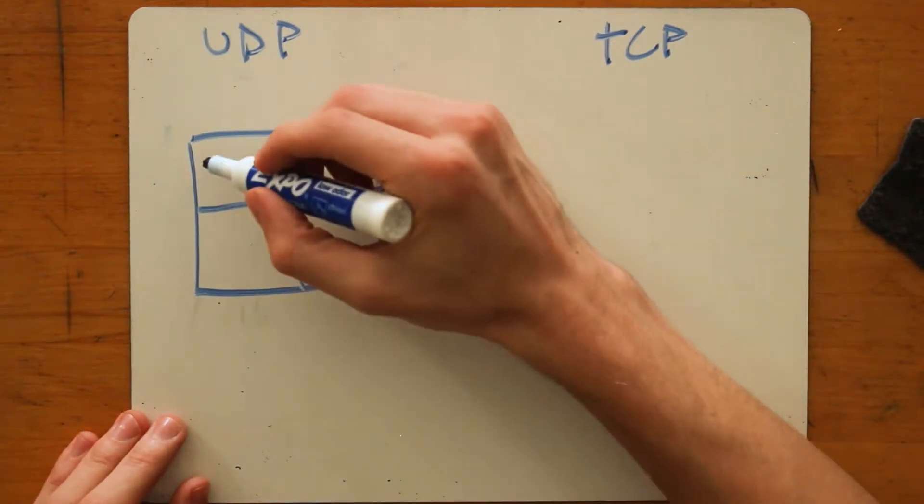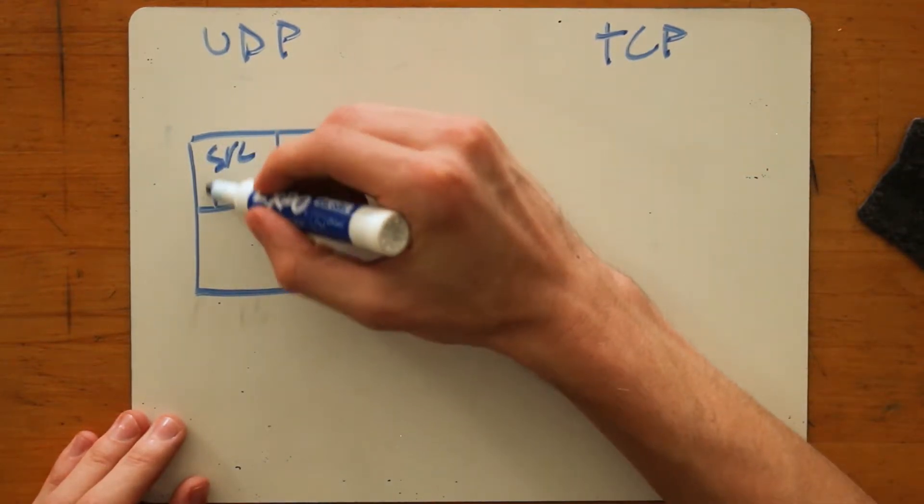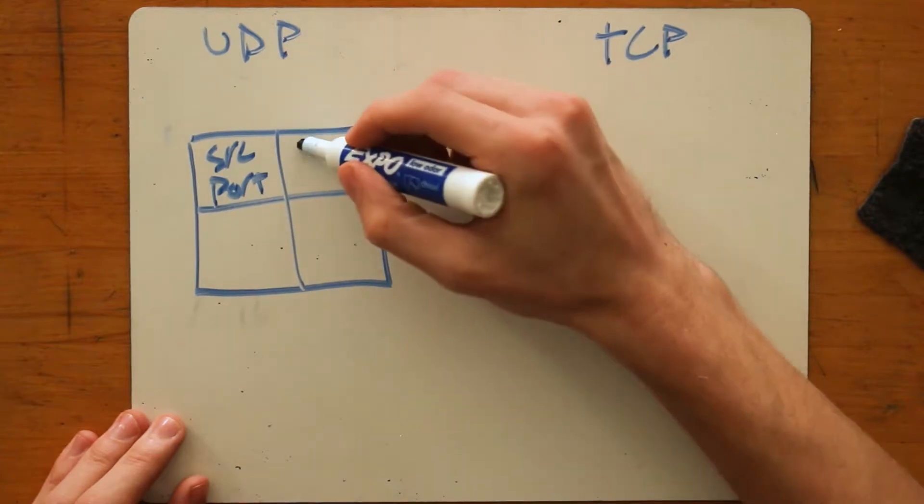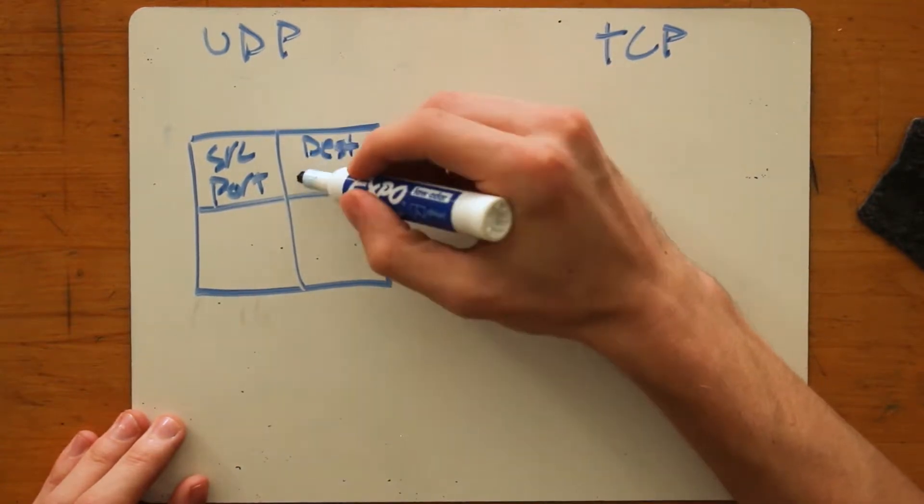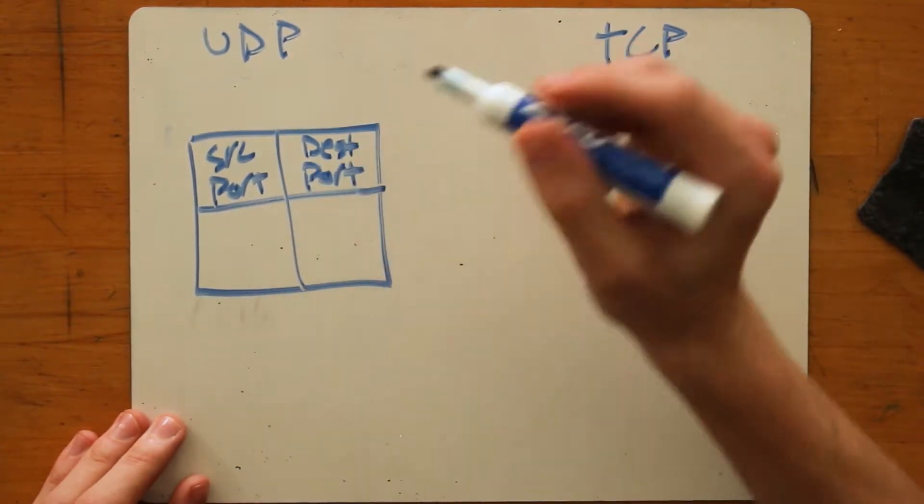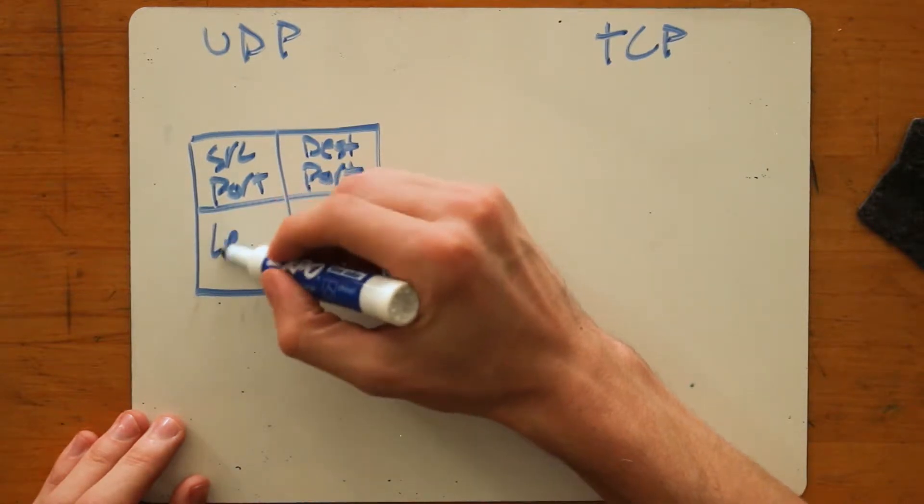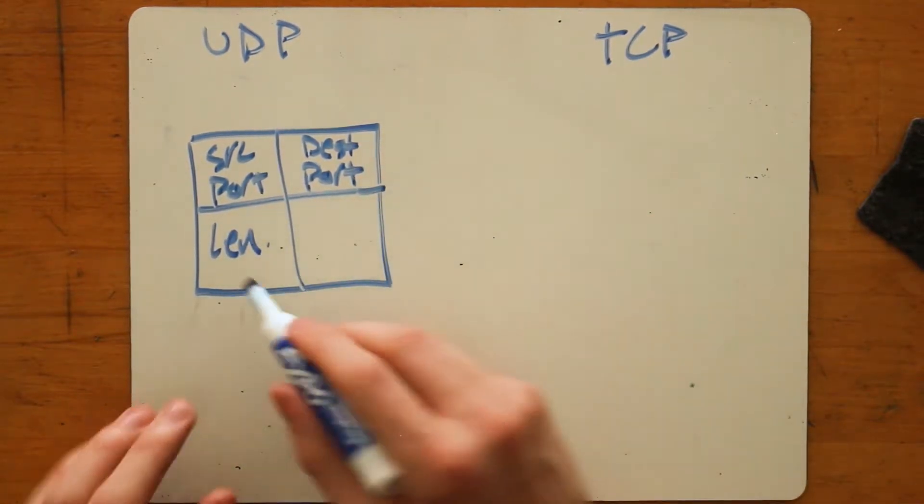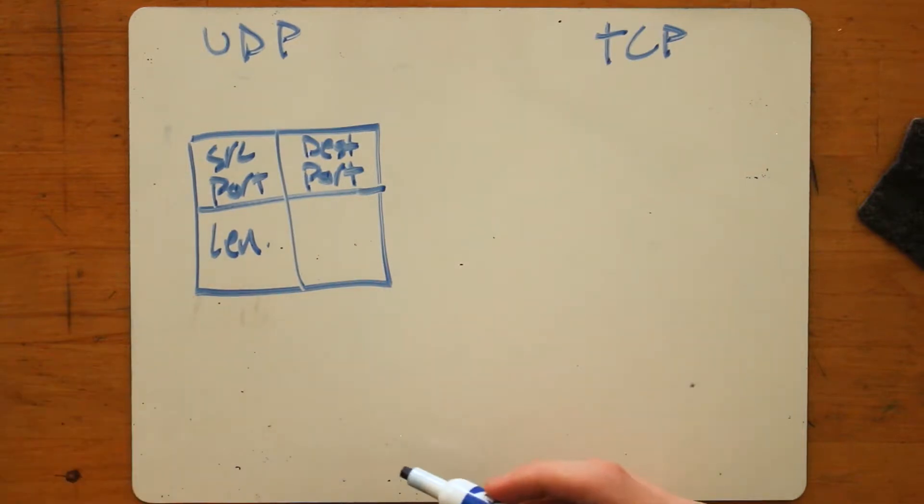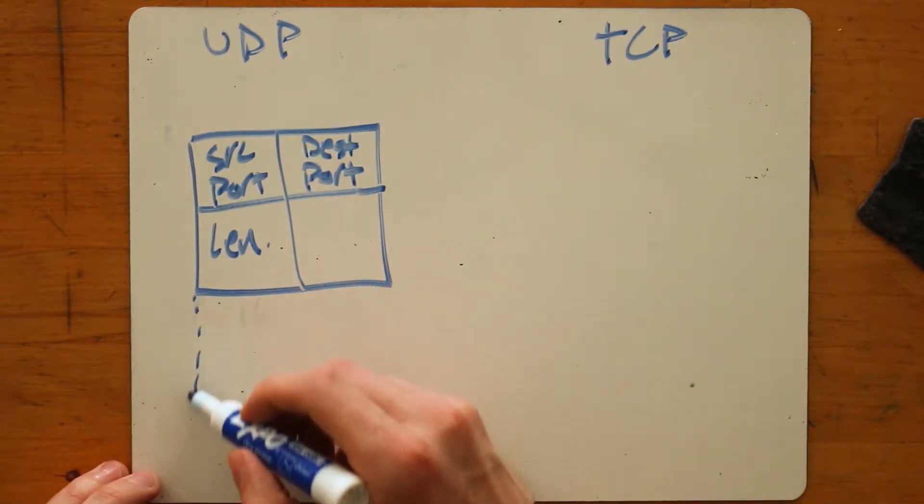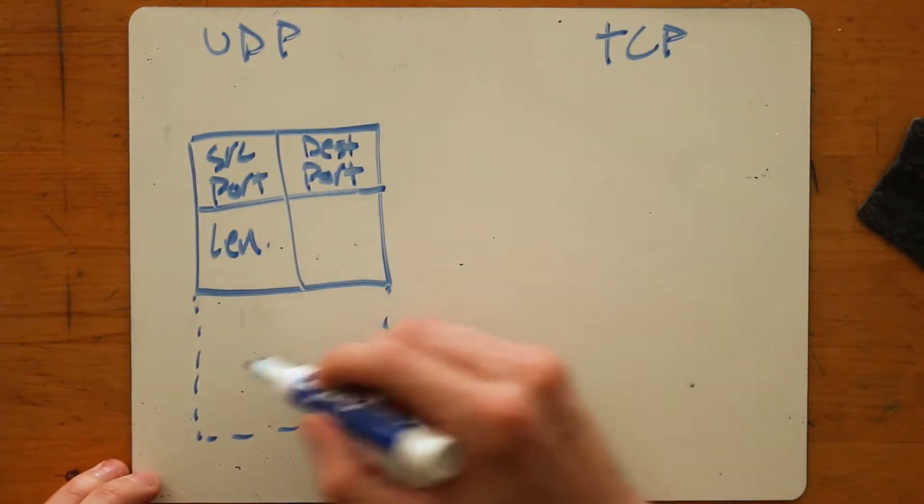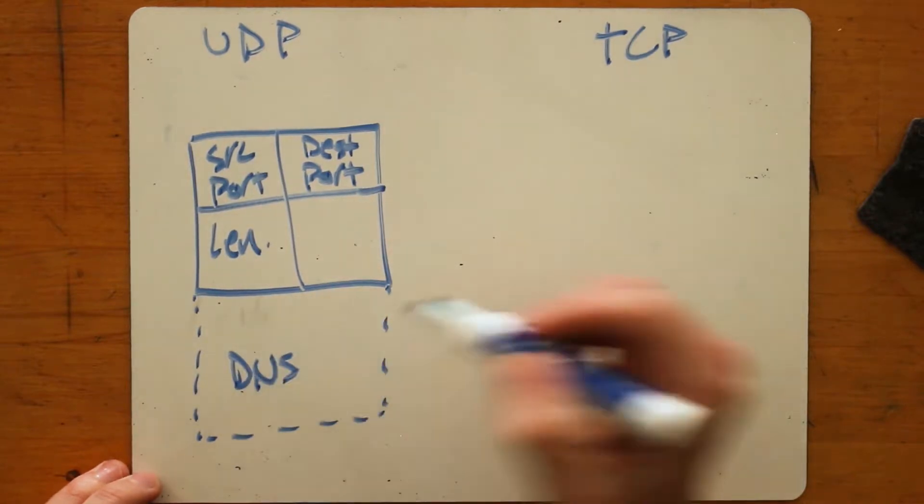And the first one is the source port. Second one is the destination port. Third one is the length. And that's the length of the payload, which would be in our case, the DNS query.